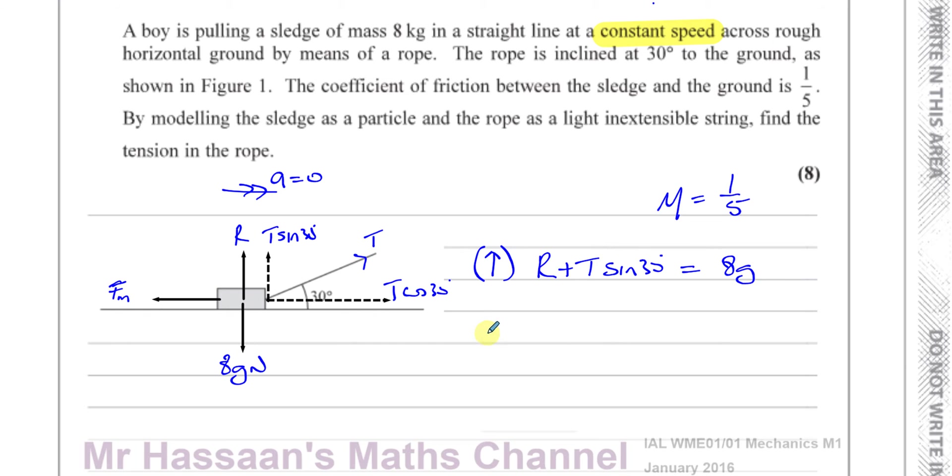And if we resolve the forces in the horizontal components in the direction of motion, then we can say that T times cosine 30 minus F_m equals zero. So T times cosine 30 must be the same as the friction, because the resultant force in this component is equal to zero as well.